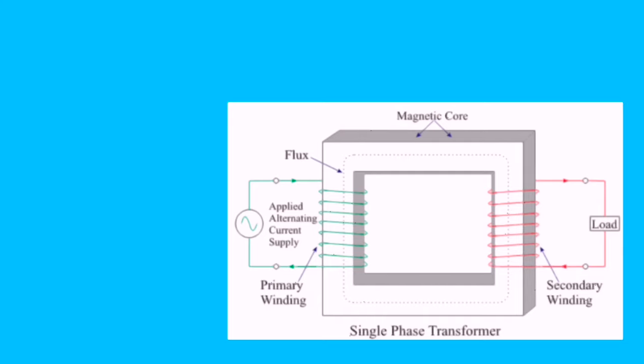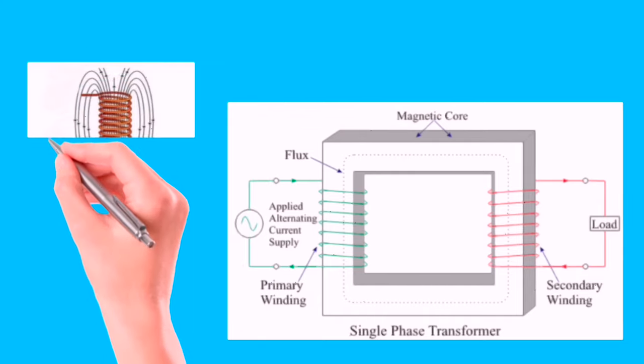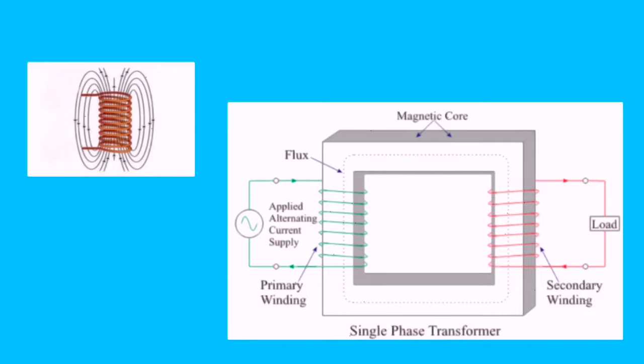A current carrying conductor produces a magnetic field around it. And the magnetic field produced by the coil is shown in the figure. With the help of the fluctuating nature of the alternating current, the magnetic field produced will also fluctuate. This magnetic flux can be linked with secondary winding with the help of the core. And this fluctuating magnetic flux will induce an EMF in secondary coil due to electromagnetic induction.